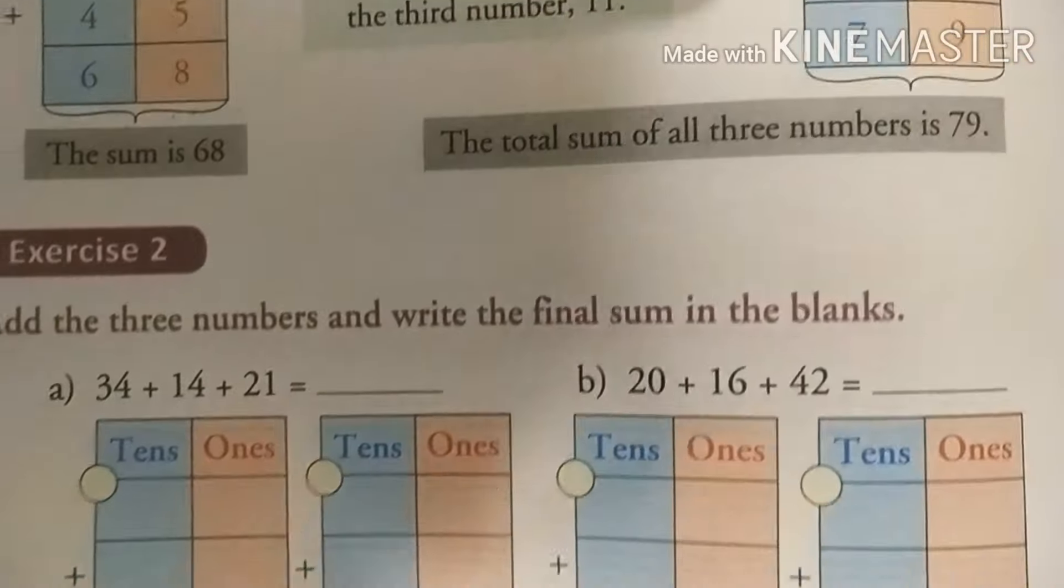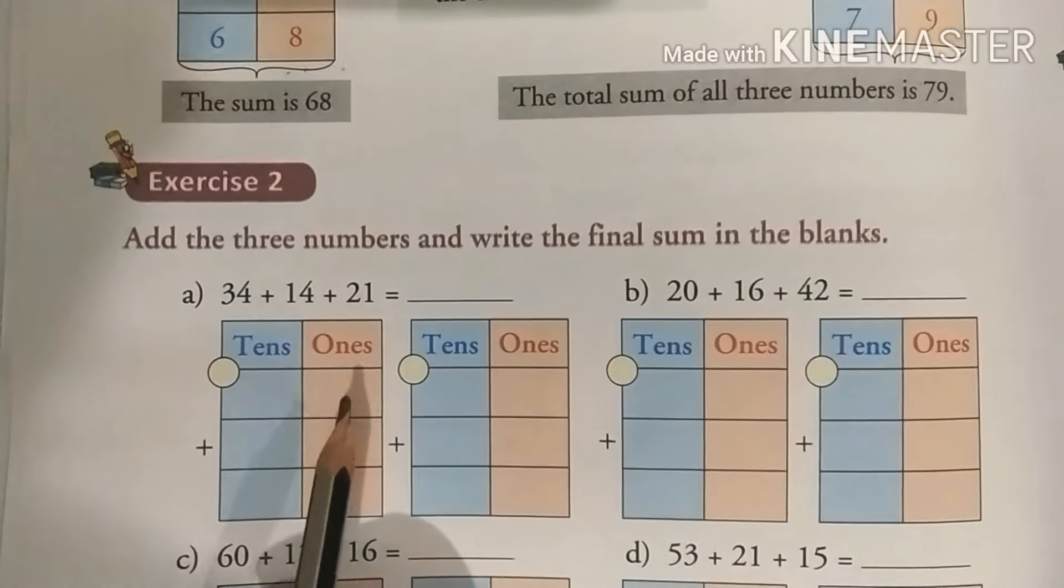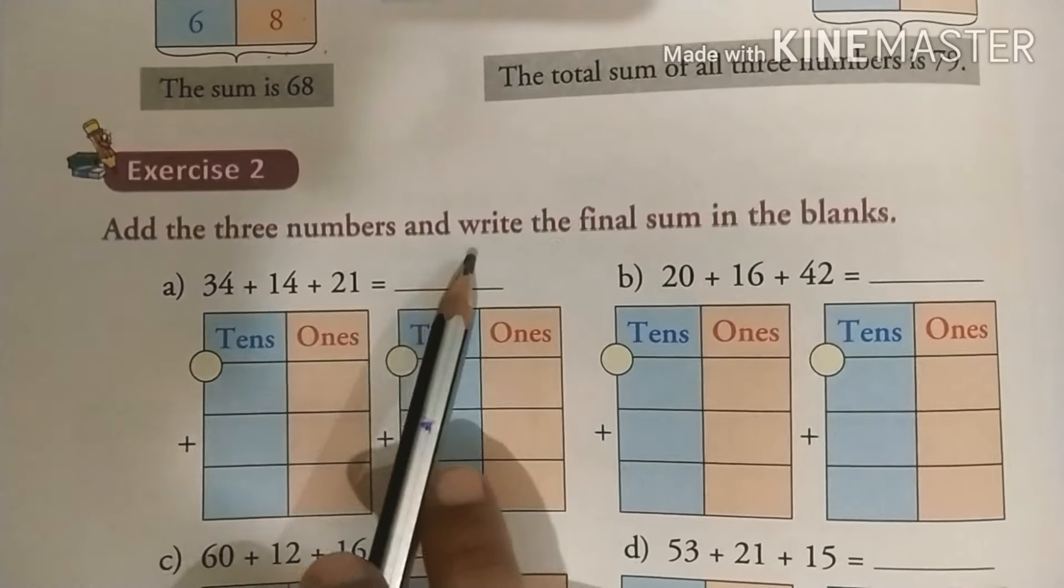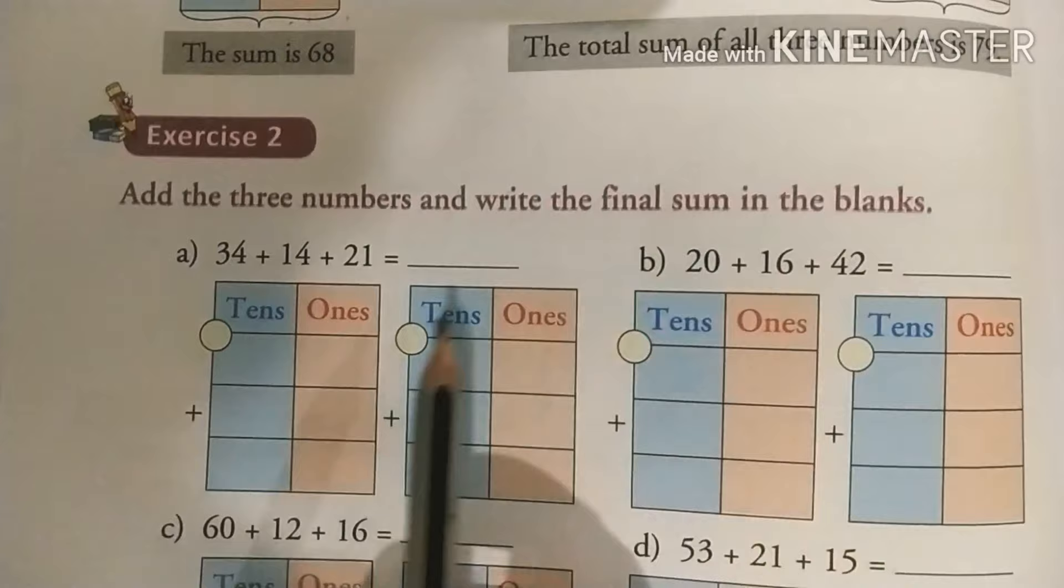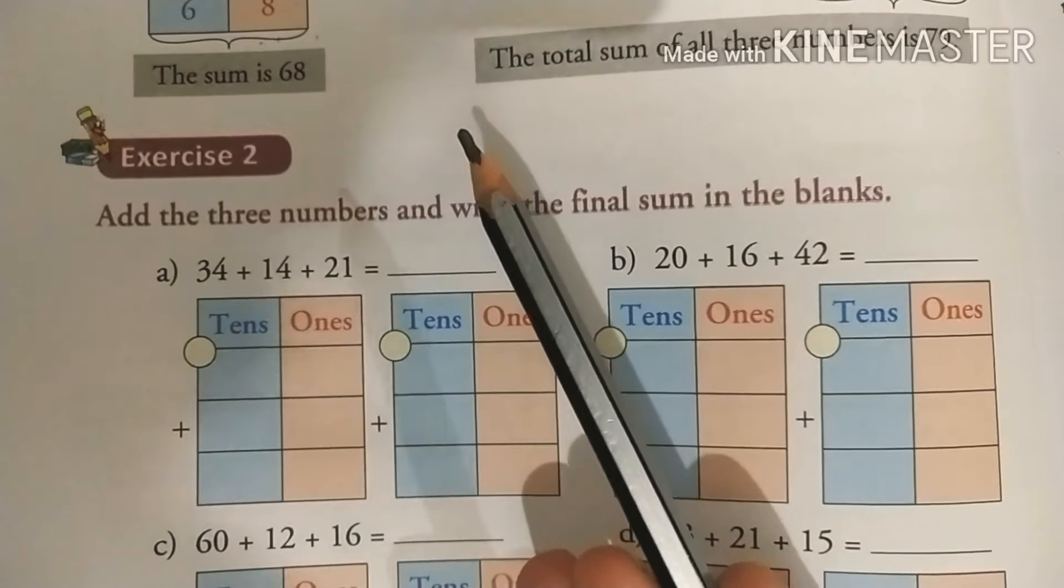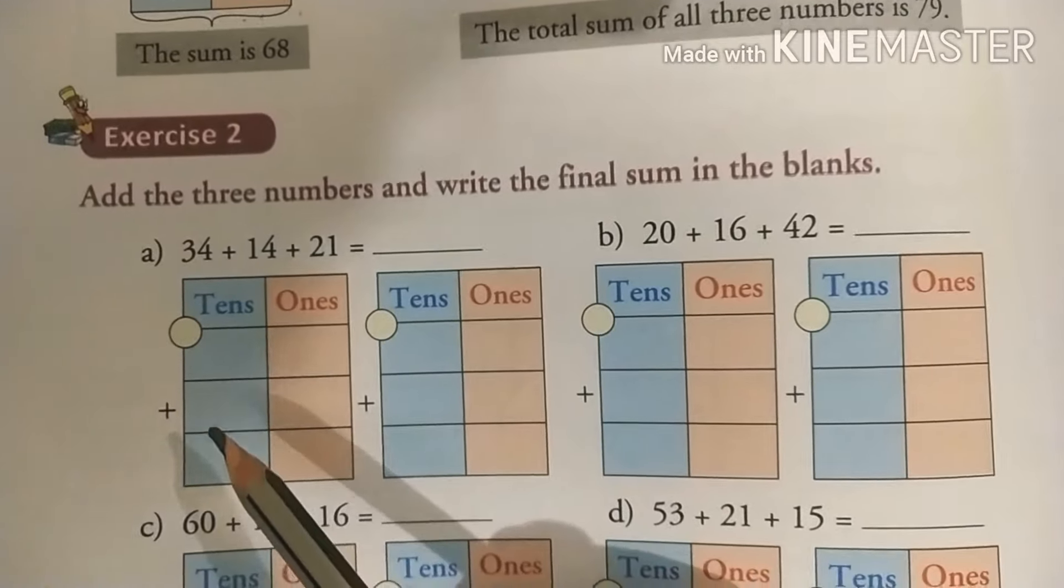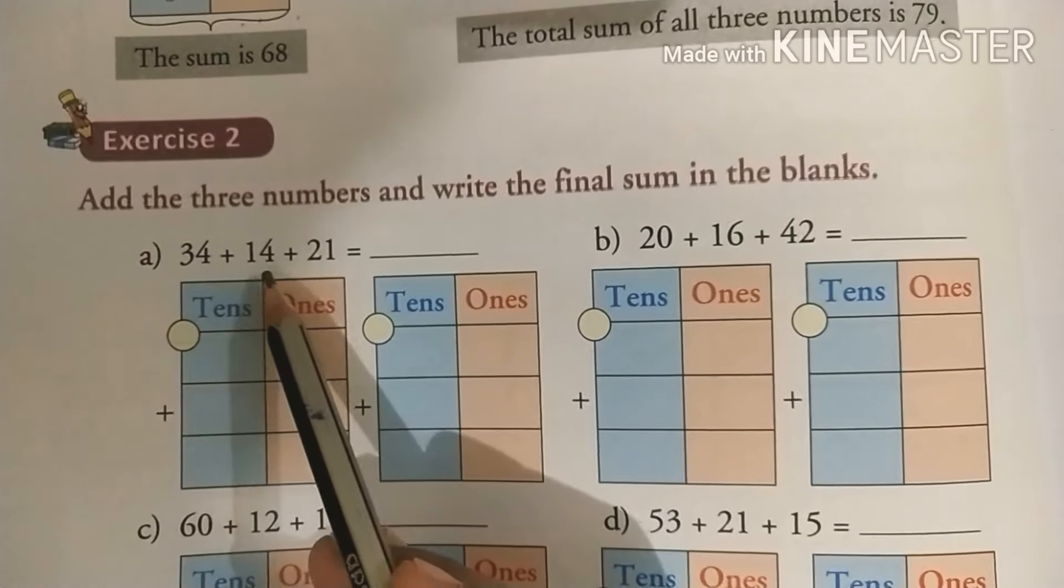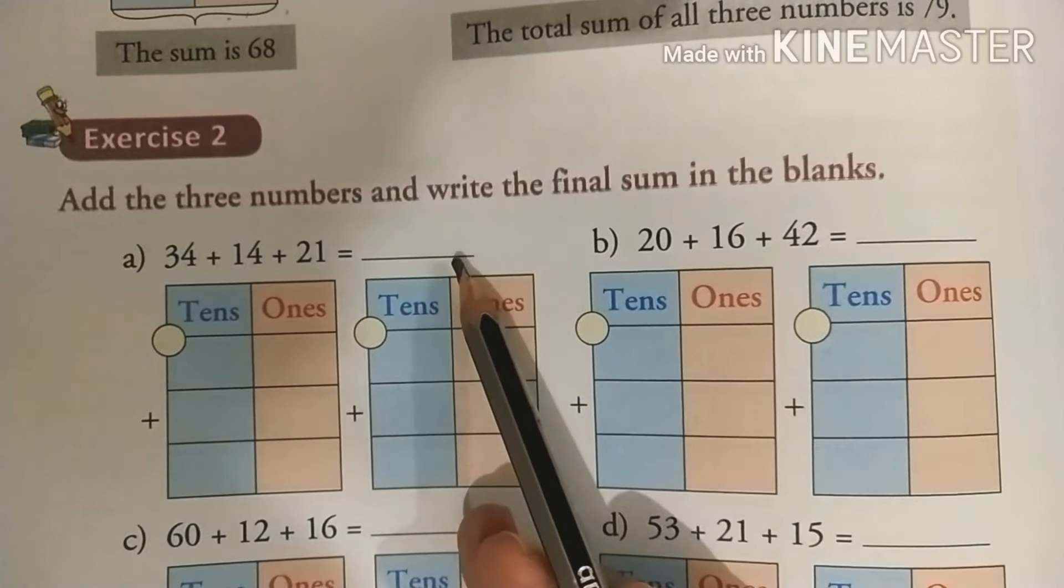The final sum is 79 and here is the exercise, exercise number 2. Add the 3 numbers and write the final sum in the blanks. Same as jaise example meinne aapko abhi samjhaaya.